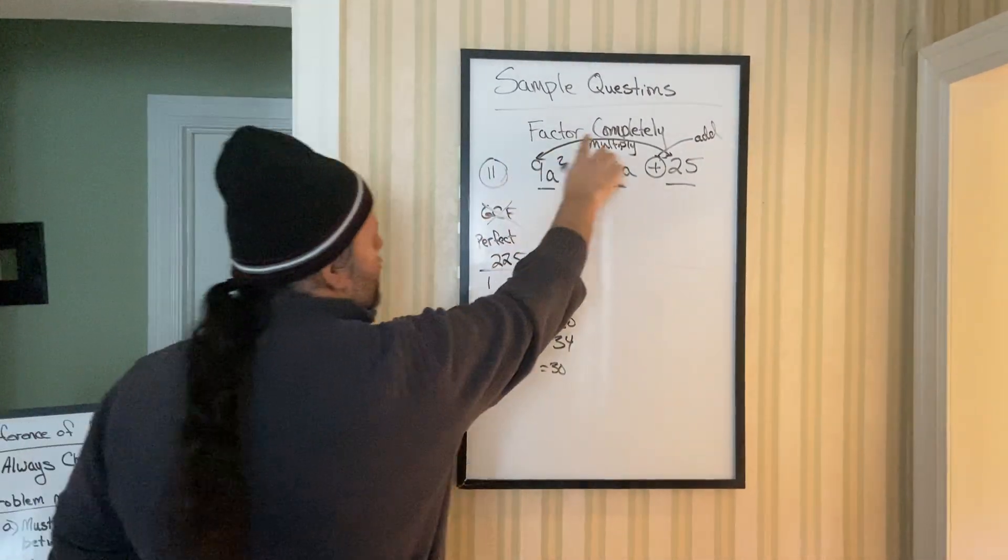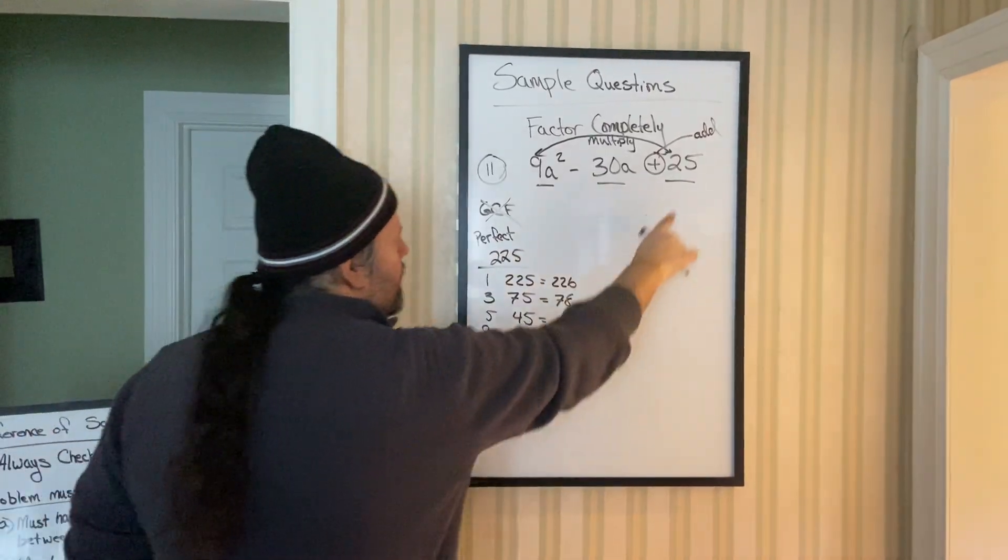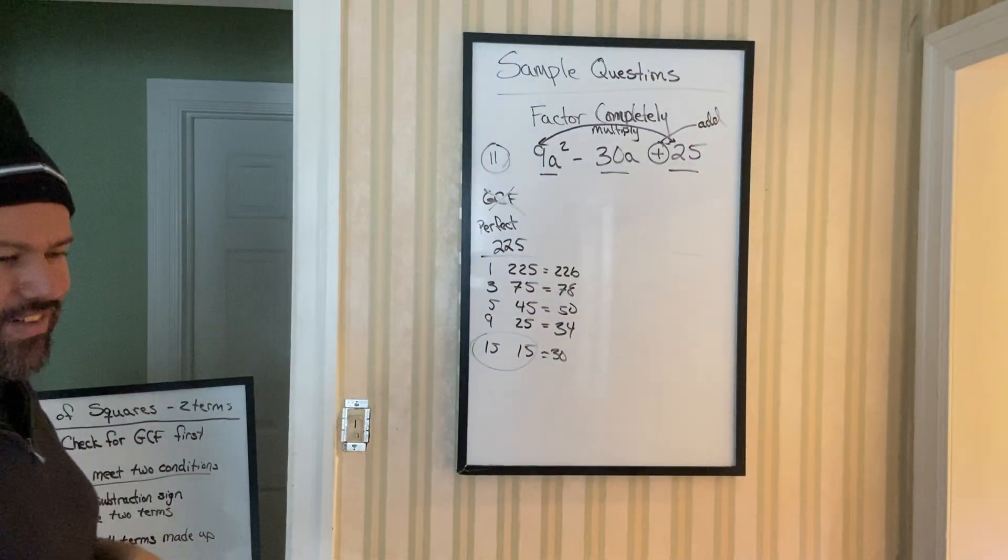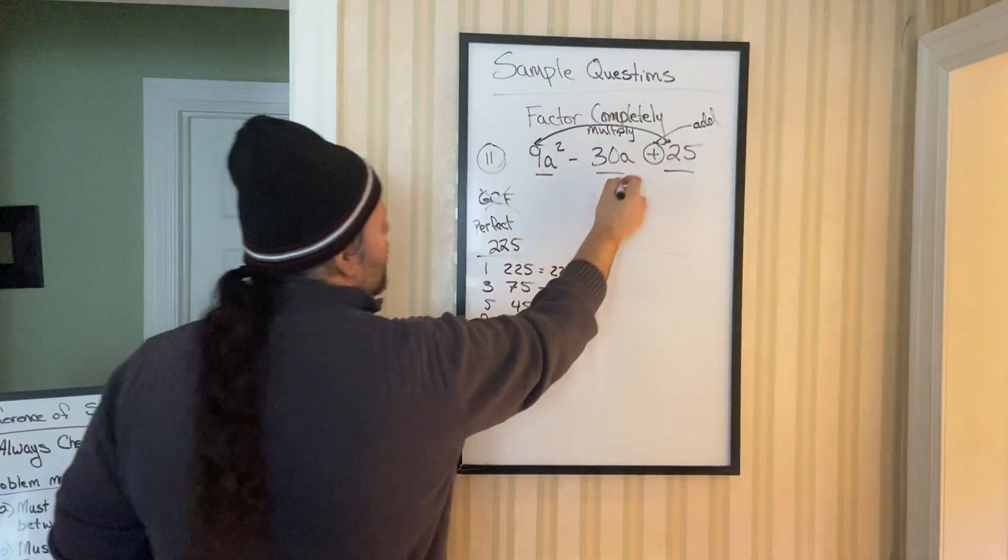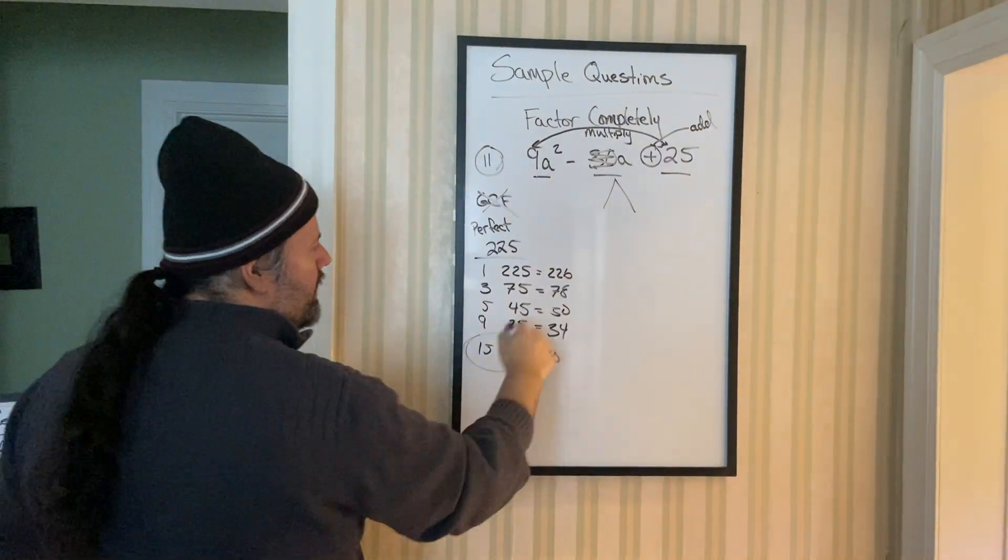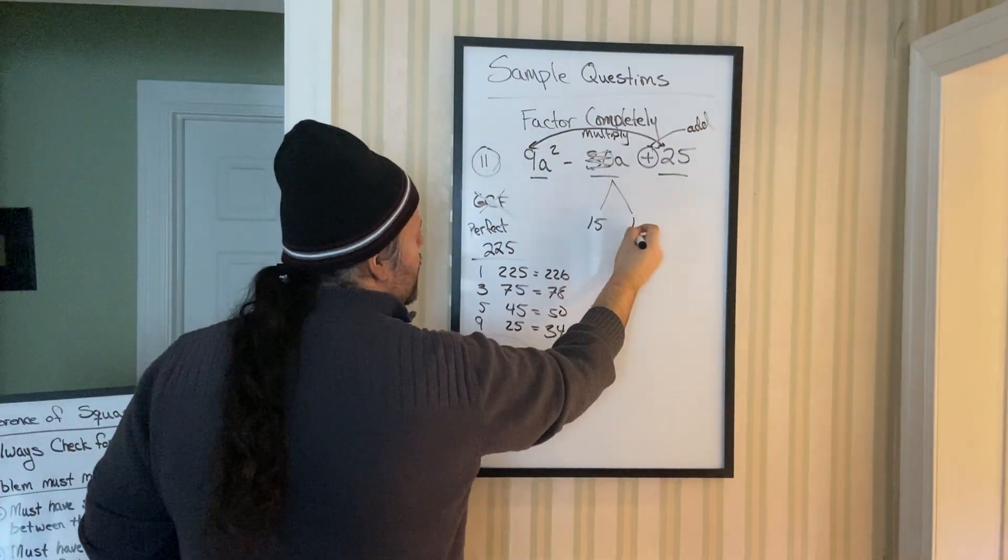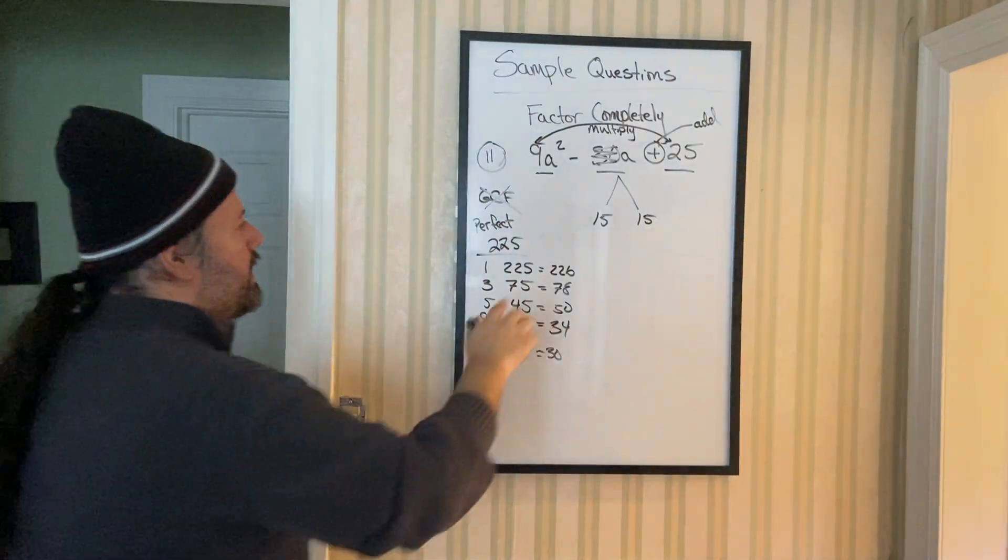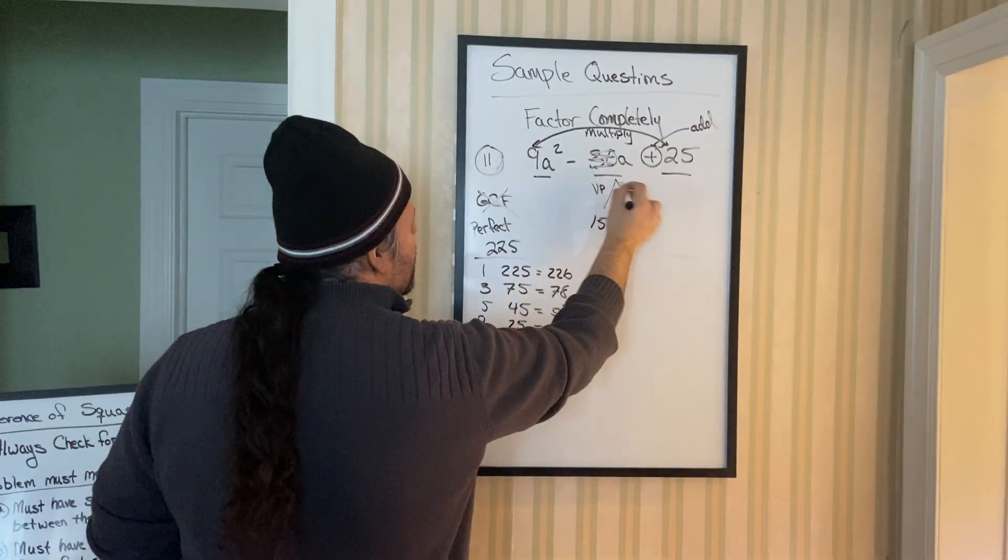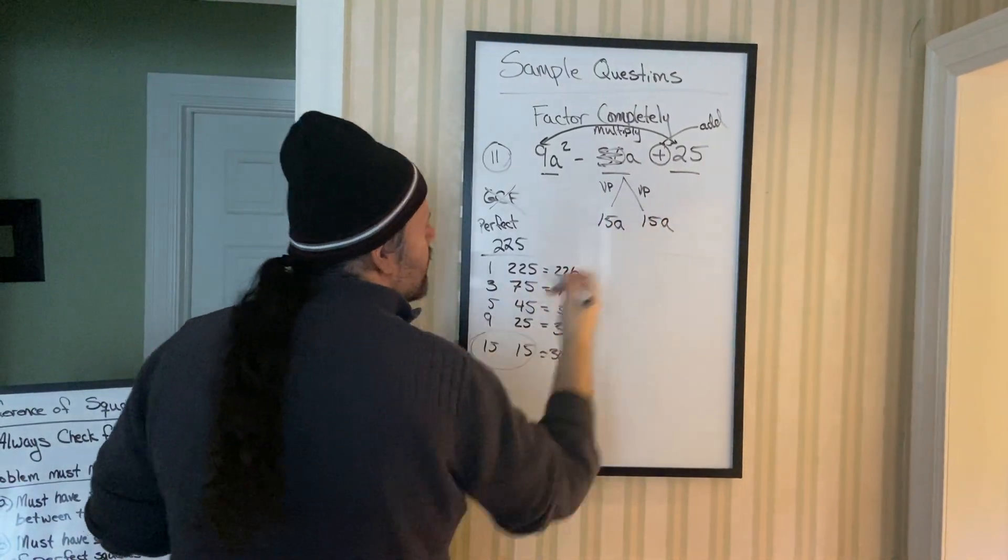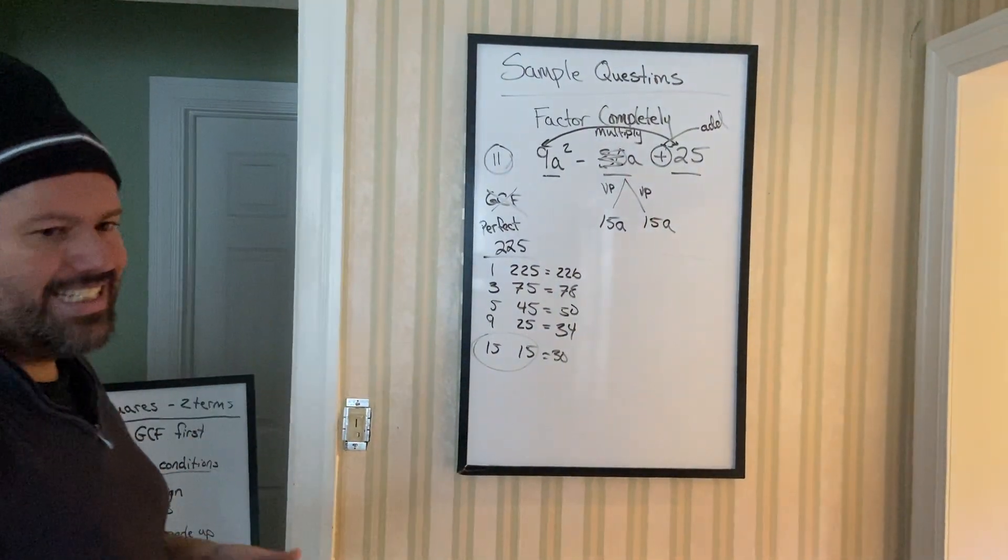Step one was the arch. Step two is the list. Step three was add the list. Step four was to choose a combo. Step five, split. Remember the 30 goes away where 15 and 15 are the new coefficients. You bring down the variable part to each term. A and A.